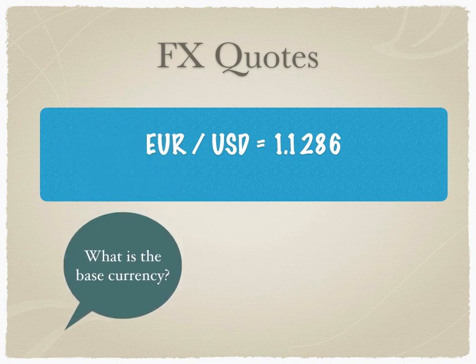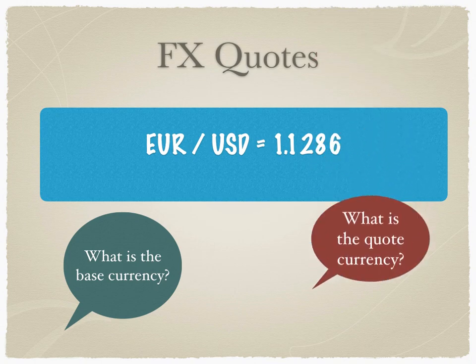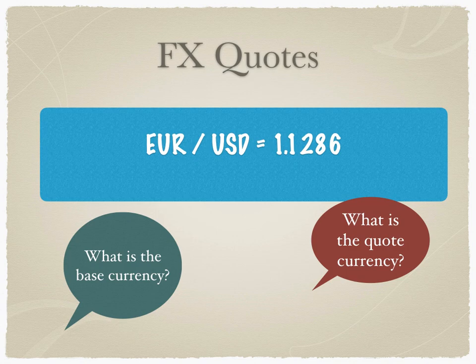In the EURUSD currency pair, the base currency is EUR — meaning EUR equals 1 and USD changes according to the weakening or strengthening of the EUR. The quote currency is the latter currency, the one that changes relative to the base; here USD is the quote currency. In some markets the quote currency is also called the reference currency. To summarize: 1 EUR fetches 1.1286 USD, or 1.1286 USD gives us 1 EUR, depending on which side of the quote you are on.